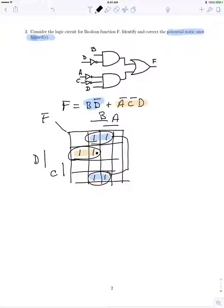We can tell that we have a static ones hazard when we move between these two groupings on the Karnaugh map. If we were looking at input combinations labeling these, if we went between 0101 and 0100, that's going between these two squares which is the potential static one hazard.